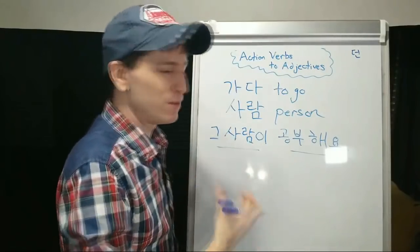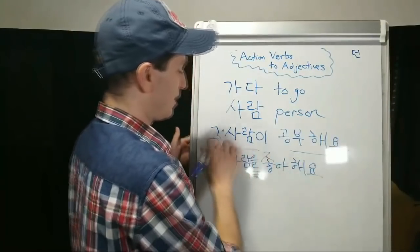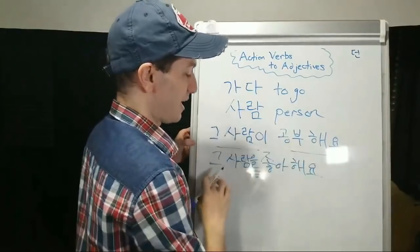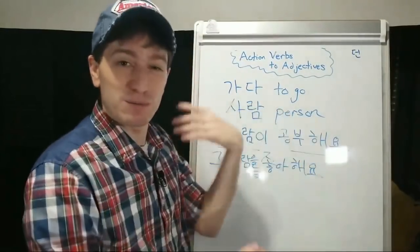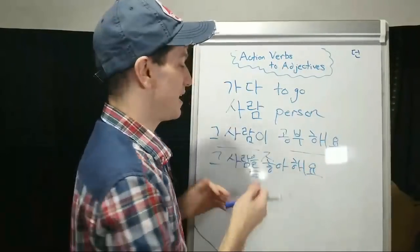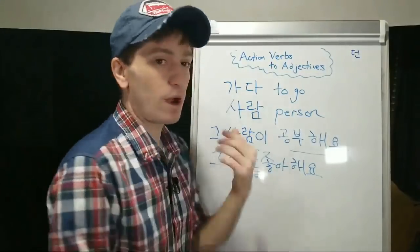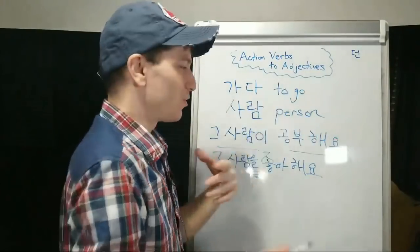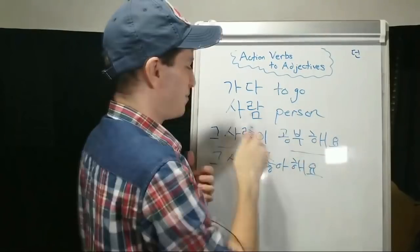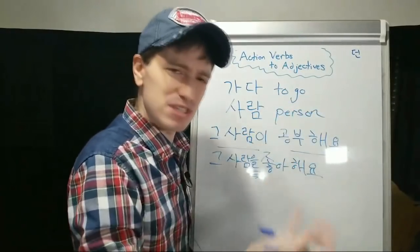We can say 그 사람을 안 좋아해요, or 그 사람을 좋아해요. So 그 사람이 공부해요 — that person studies. 그 사람을 좋아해요 — I like that person. This is how we might say it without knowing any other grammar. If you wanted to say I like people who study, you might say 그 사람이 공부해요, 그 사람을 좋아해요. Or you might try to say 그 사람이 공부하기 때문에 — because that person studies, I like him. But none of them are just saying I like people who study.